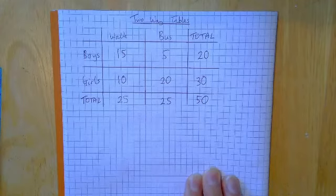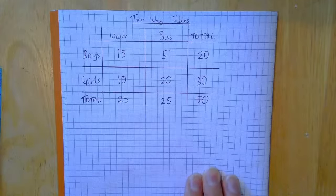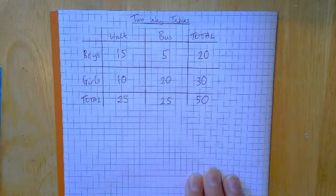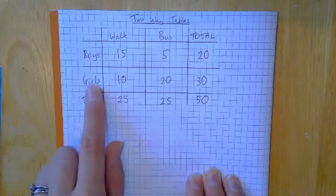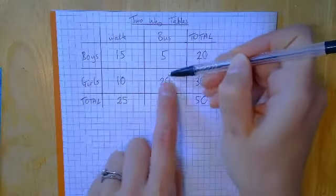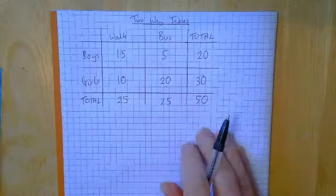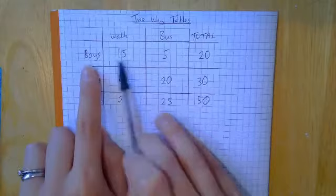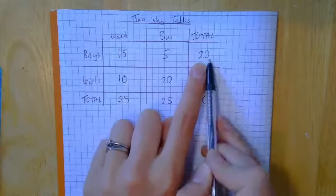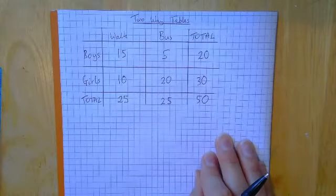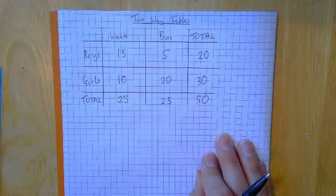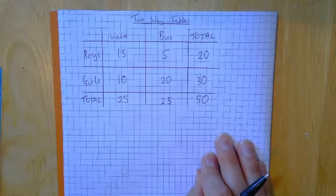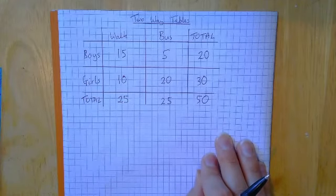Once we've filled in our two-way table, you can be asked to answer some questions about it. So the questions might be things like, how many girls got the bus? Well, we would go find girls and bus, which is 20. You might be asked how many boys were there in total? Well, boys' total is 20. So once you've drawn up your two-way table, you can be asked questions about it.